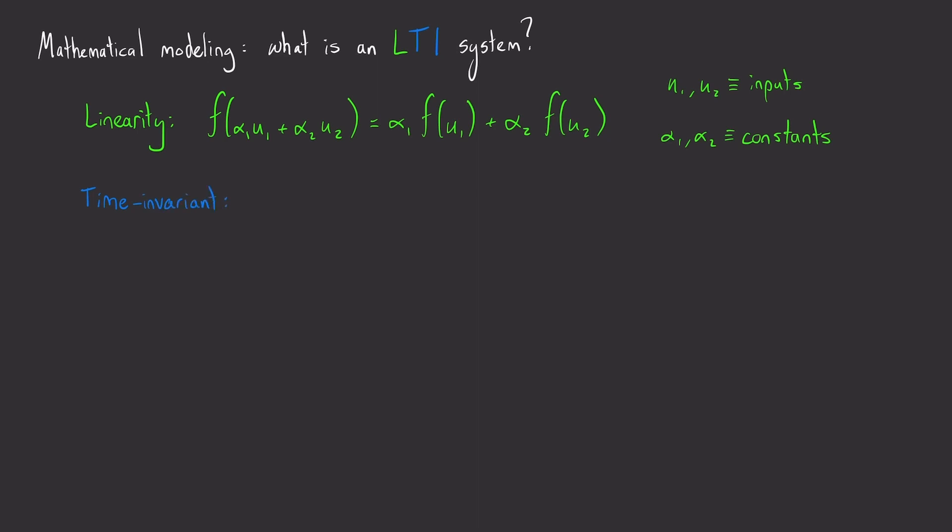The property of time invariance says that the relationship between output and input remains constant in time. Now this can be a little bit confusing because your input can vary in time, your input could be something like a sinusoid, but it's just saying that f, the thing that does the linear transformation is not depending on time.